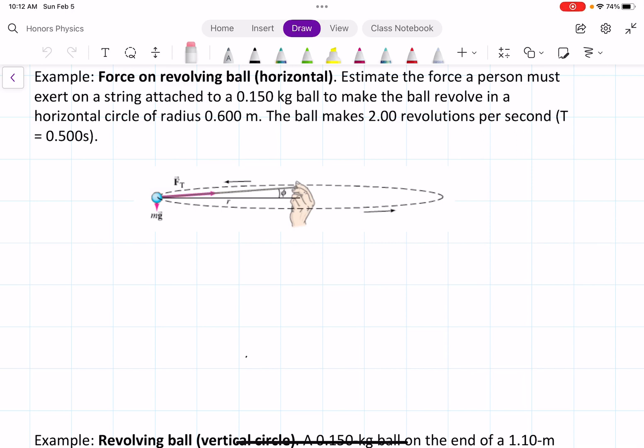For this example, we want to estimate the force a person must exert on a string attached to a 0.15 kilogram ball to make the ball revolve in a horizontal circle of radius 0.6 meters.